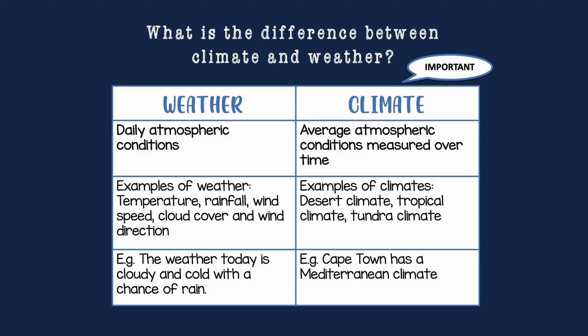What is the difference between weather and climate? Weather is the daily atmospheric conditions — for example, temperature, rainfall, and wind speed. I could say that today the weather is cloudy and cold with a chance of rain, or very windy with clear skies. Climate, on the other hand, is the average atmospheric conditions measured over time. You've heard things like Mediterranean climate — those are weather patterns measured over a long period of time. You can get specific climate zones like desert, tropical, or tundra climates.